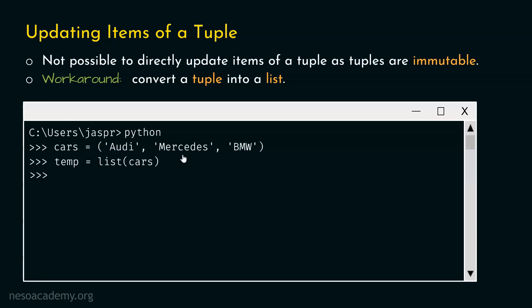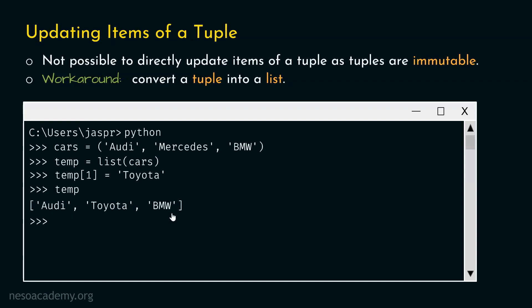We can access this item using its index. For this purpose, we will type temp[1], and then with the assignment operator, we will update this item with Toyota. Let's type: temp[1] = 'Toyota'. This command allows us to replace Mercedes with Toyota in our temp list. Let's hit enter and type temp. We are getting this list with three items: Audi, Toyota, and BMW. We have successfully updated our list.